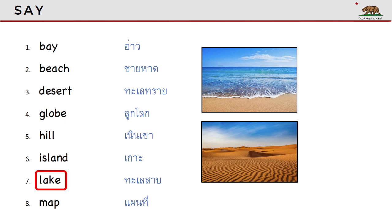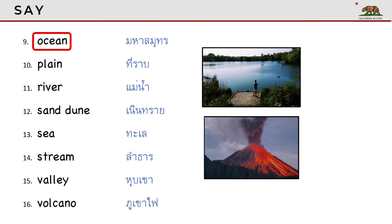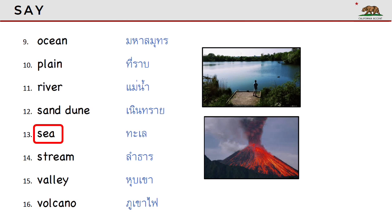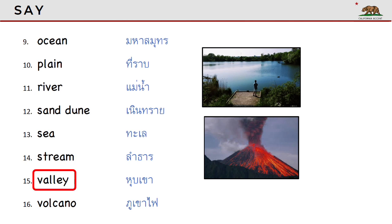Lake. Map. Ocean. Plain. River. Sand Dune. Sea. Stream. Valley. Volcano.